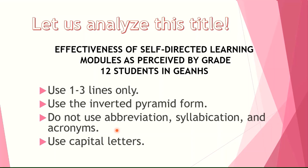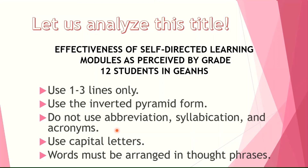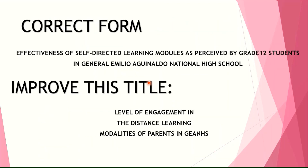The last guideline is that words must be arranged in thought phrases. Analyzing the sample title, the phrase 'Effectiveness of Self-Directed Learning' was cut off — the word 'modules' should stay with it. Also, 'Grade' was separated from '12,' which is incorrect. The correct form is: 'Effectiveness of Self-Directed Learning Modules as Perceived by Grade 12 Students / in General Emilio Aguinaldo National High School.' You must not cut phrases just to make a three-line title; if three lines aren't possible, just use two.